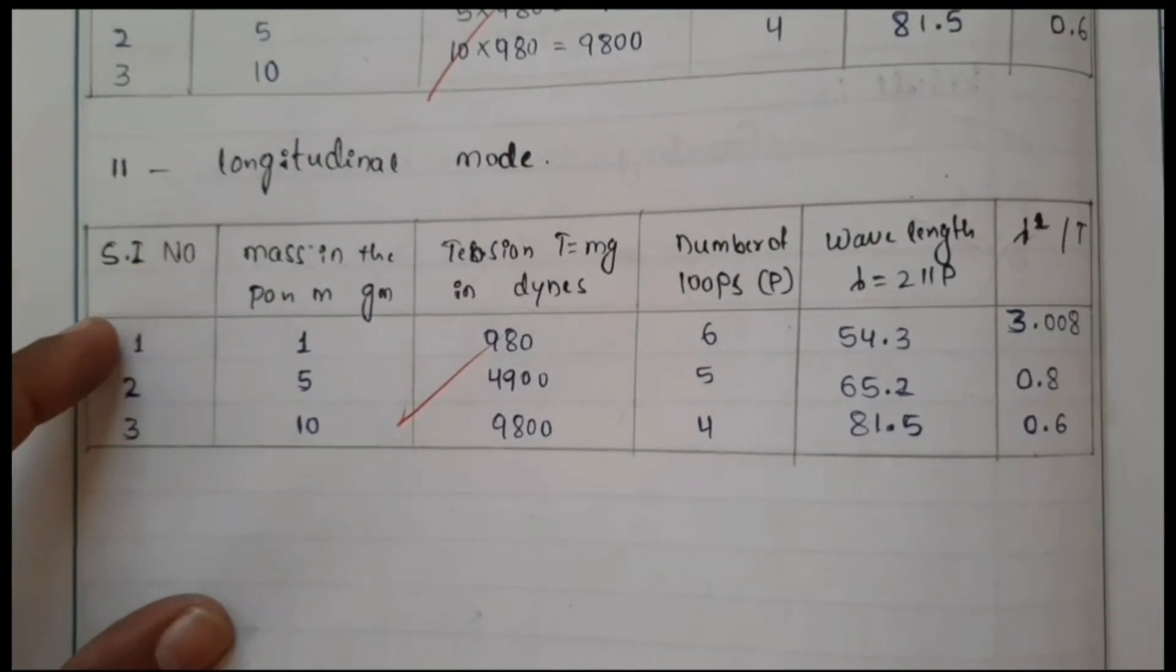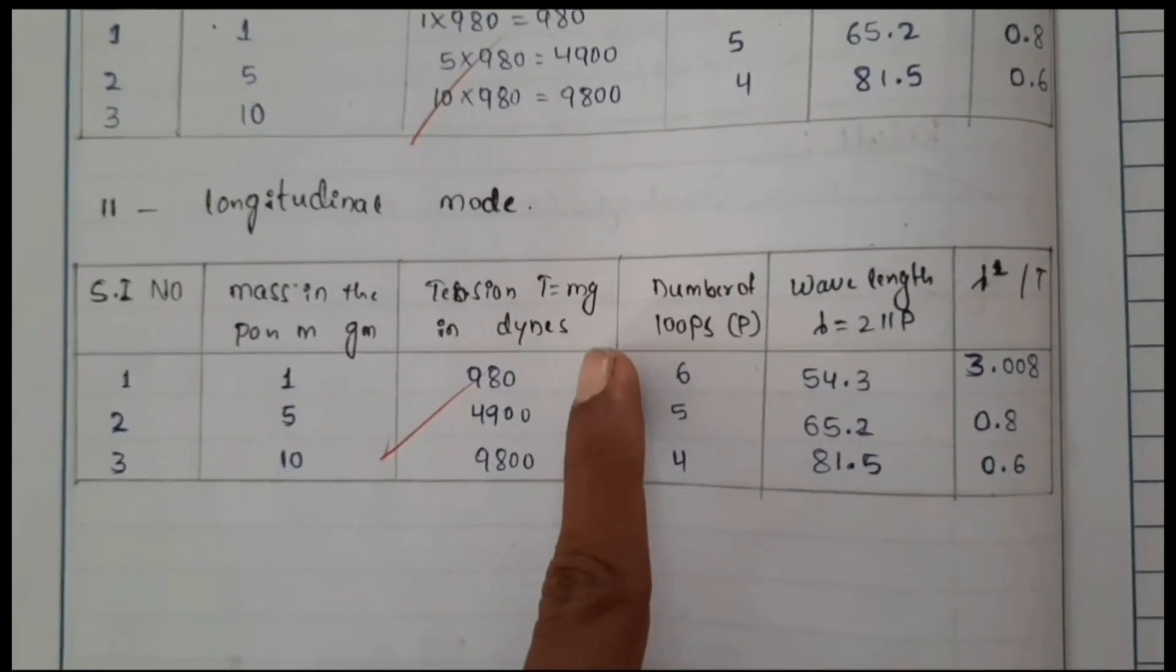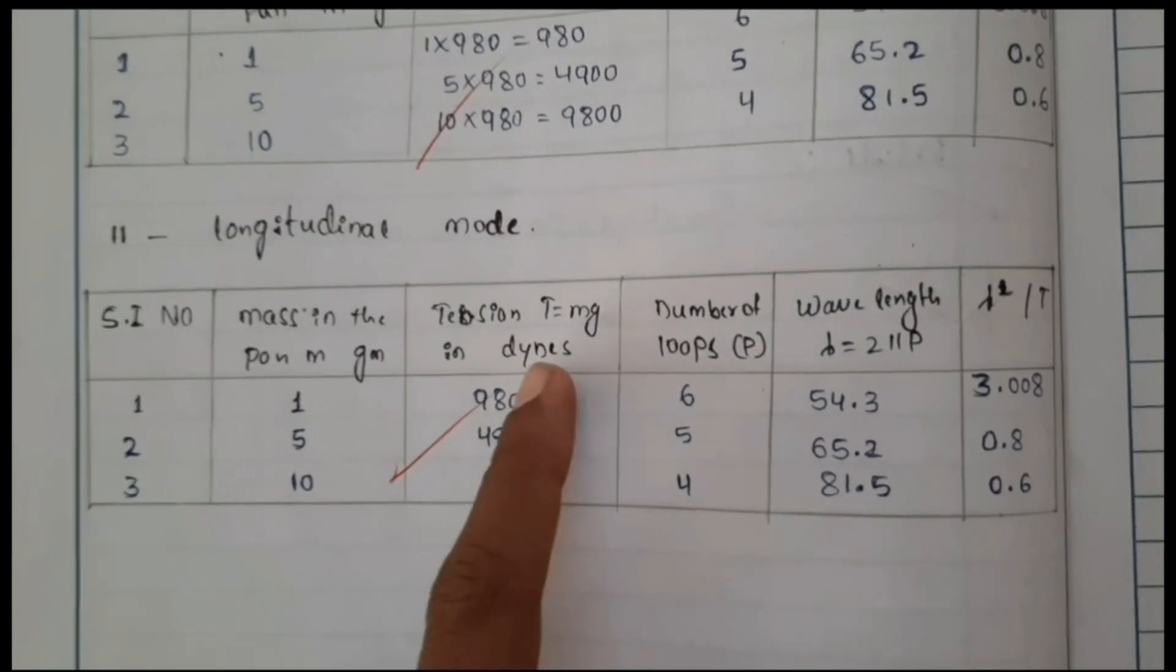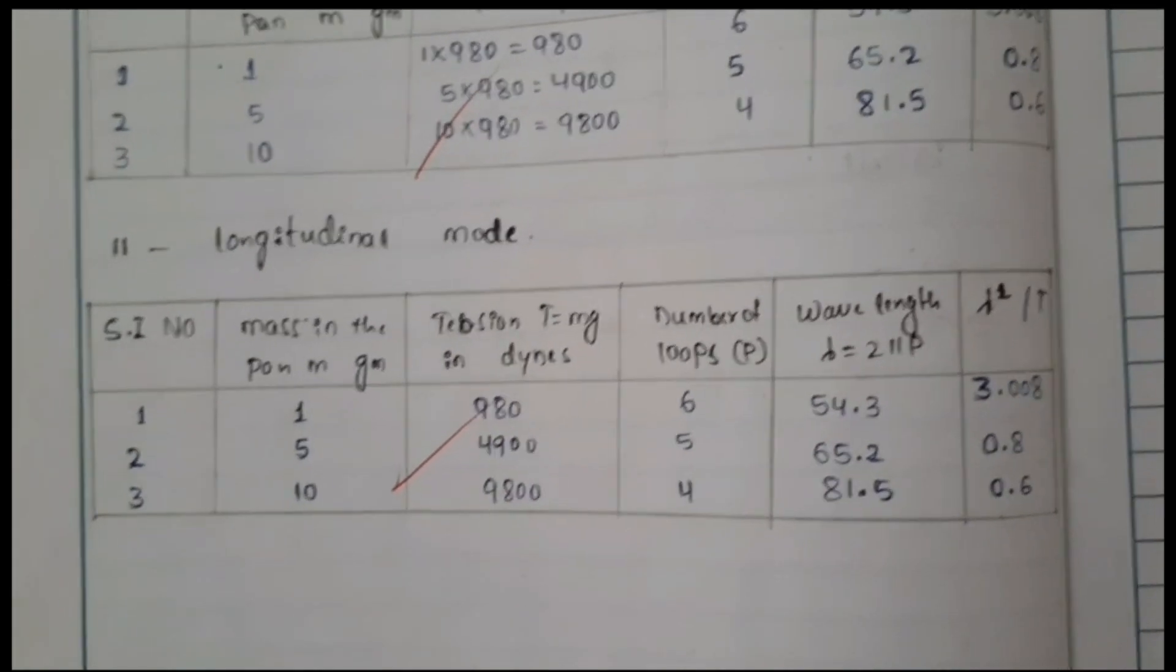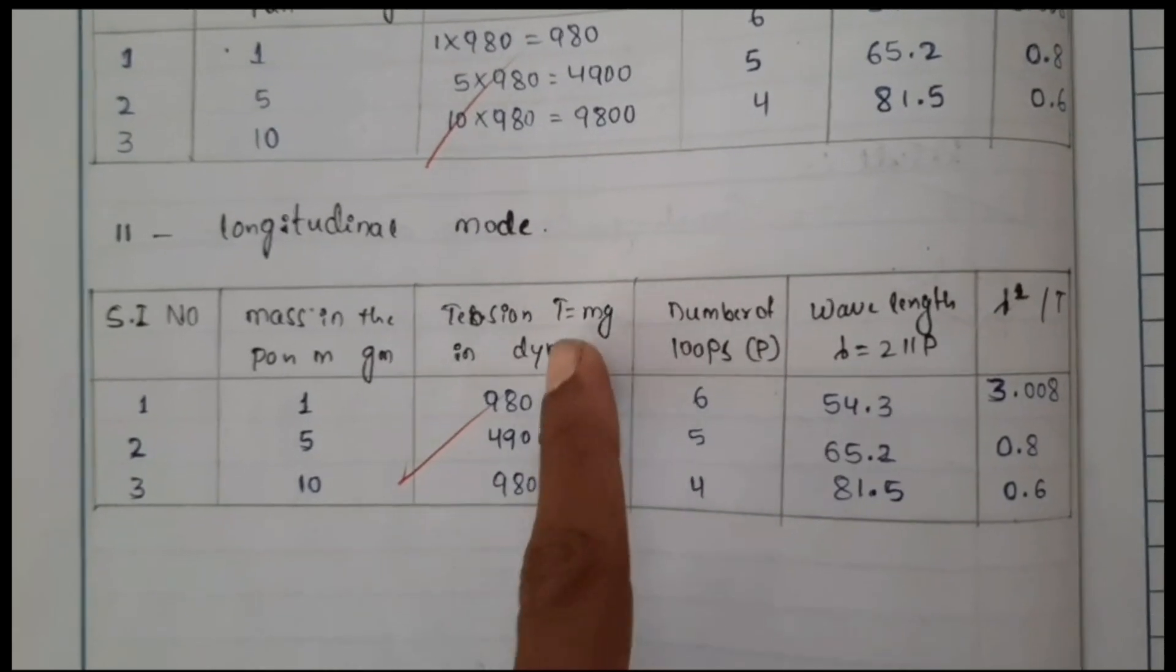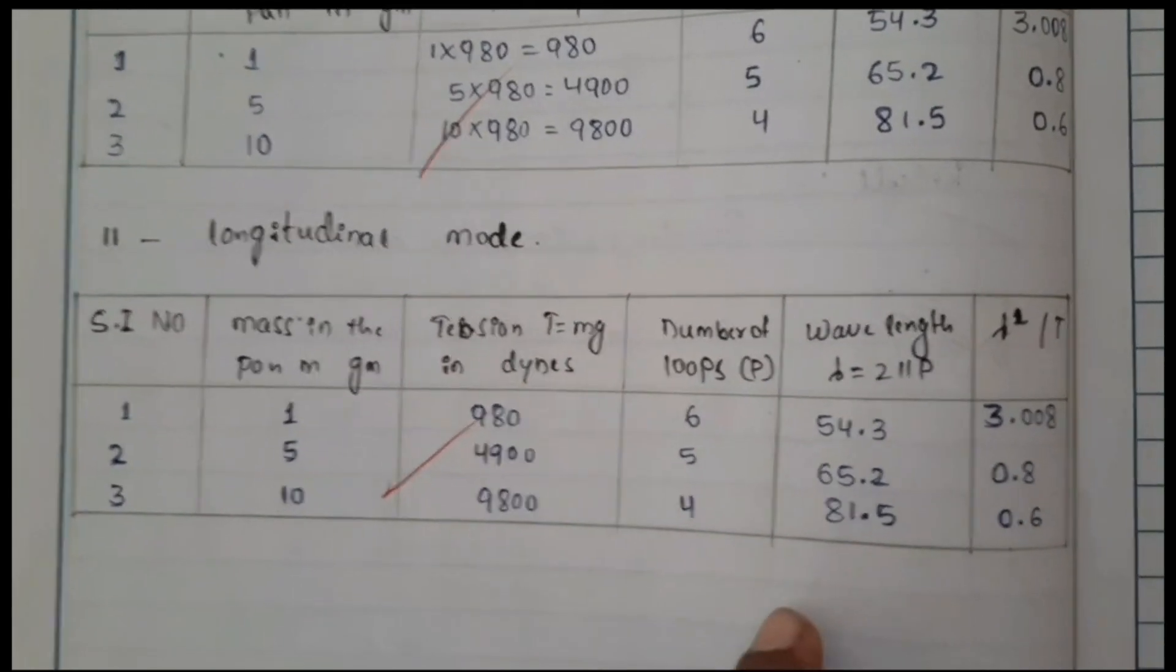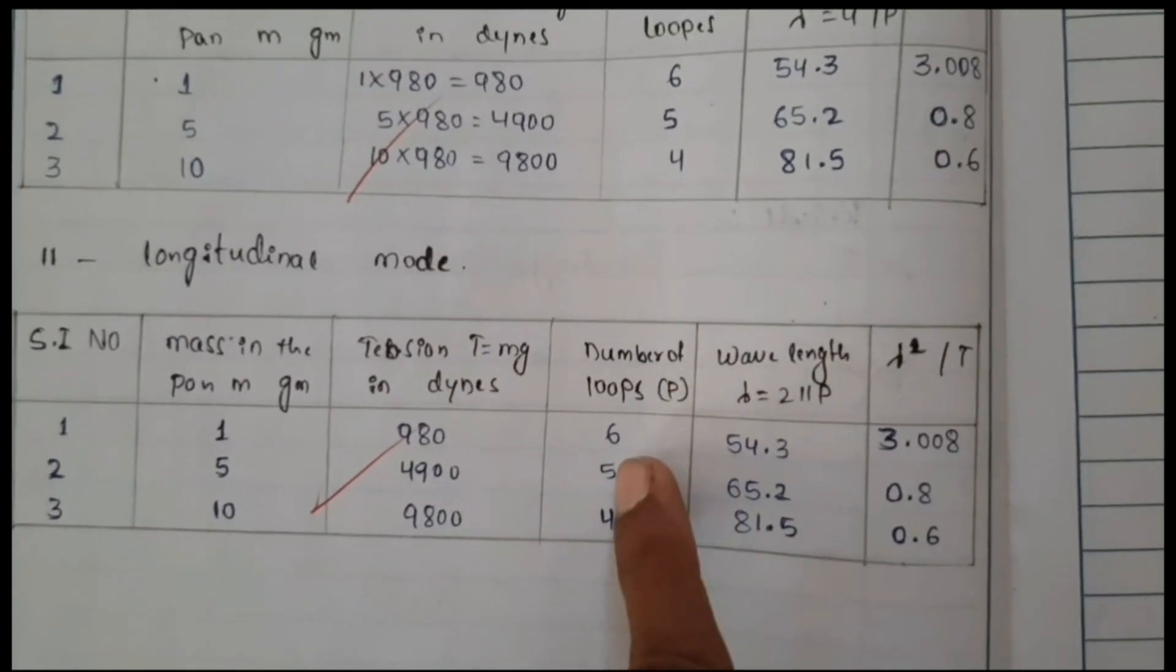This is the tabular column for longitudinal mode: mass in the pan, tension in the string that is given by mass times acceleration due to gravity, g equals 9.8 meters per second squared, or you can convert to dynes. If you multiply mass times acceleration due to gravity, you will get tension T for the applied weight. Weights are in terms of grams: 1, 5, and 10 grams. I have applied here 10 grams.